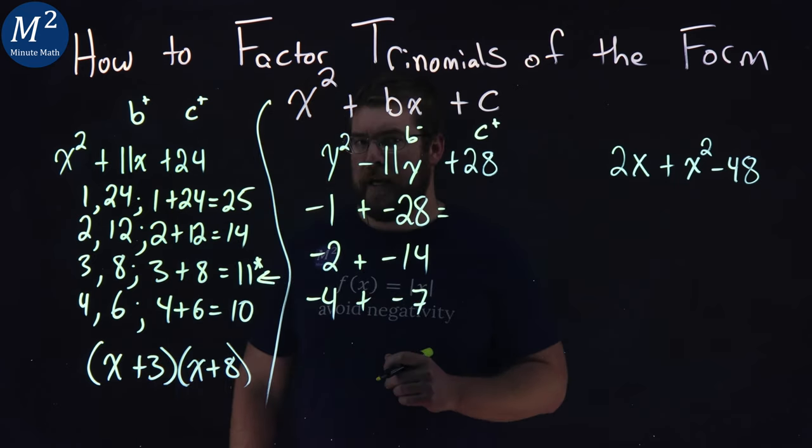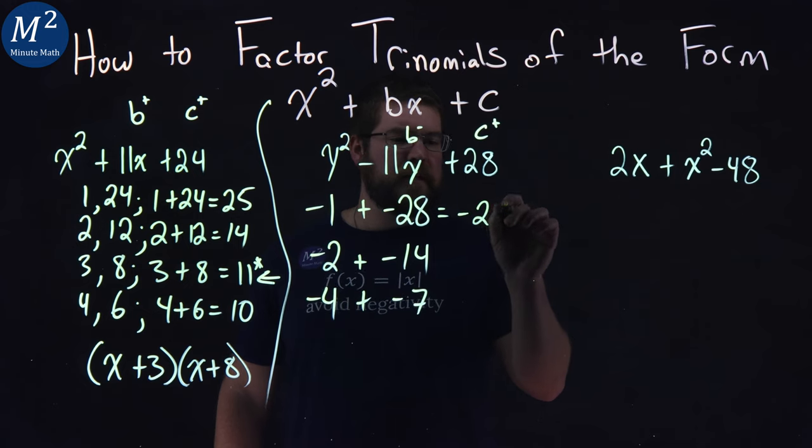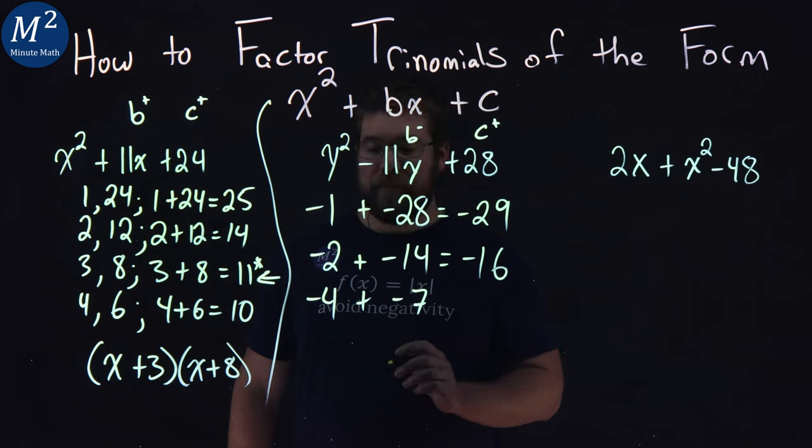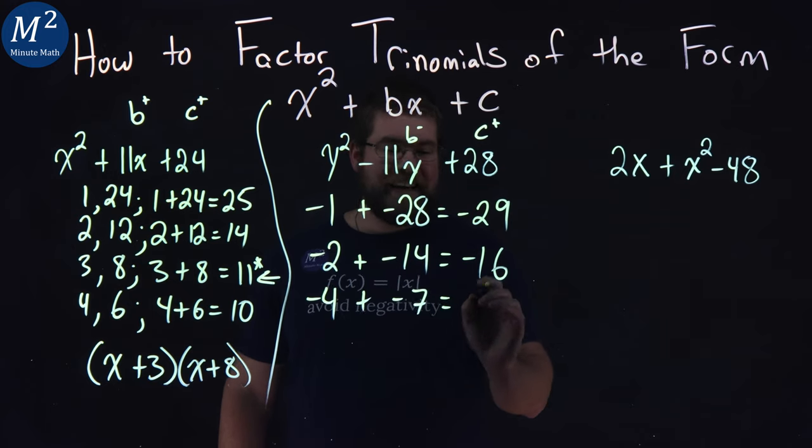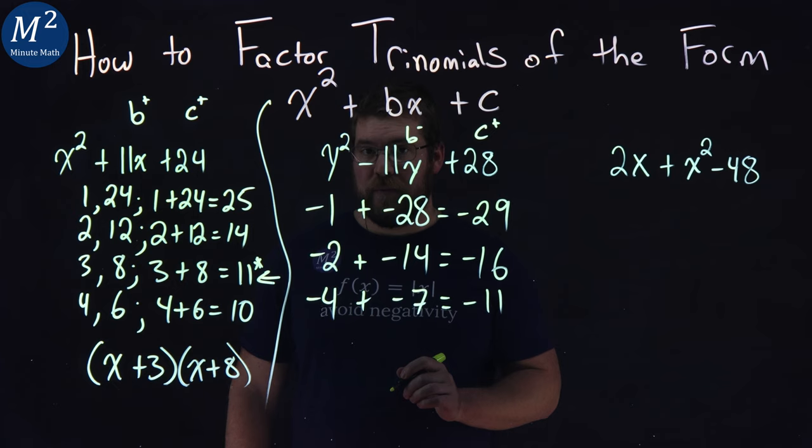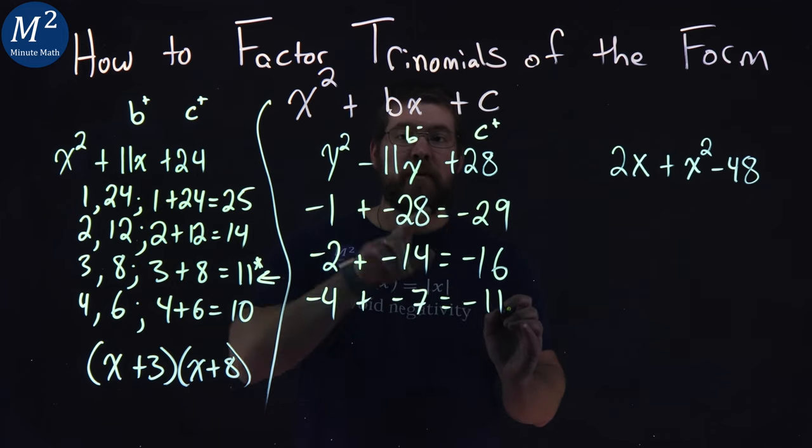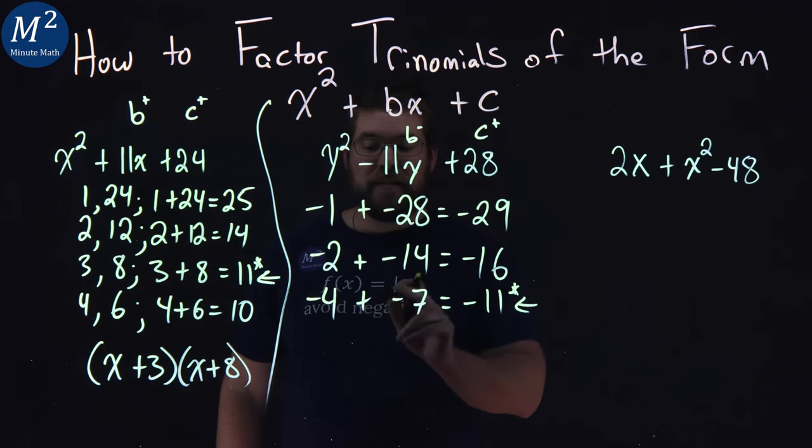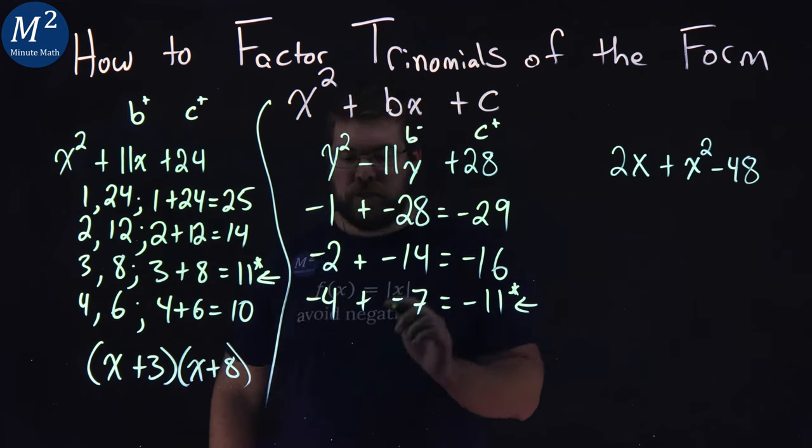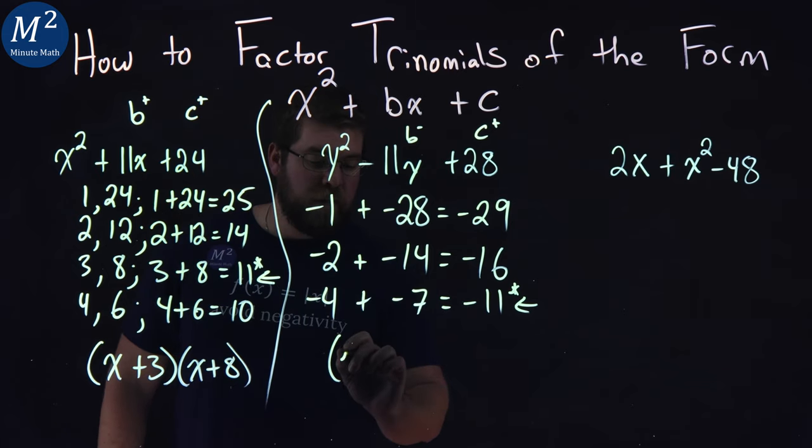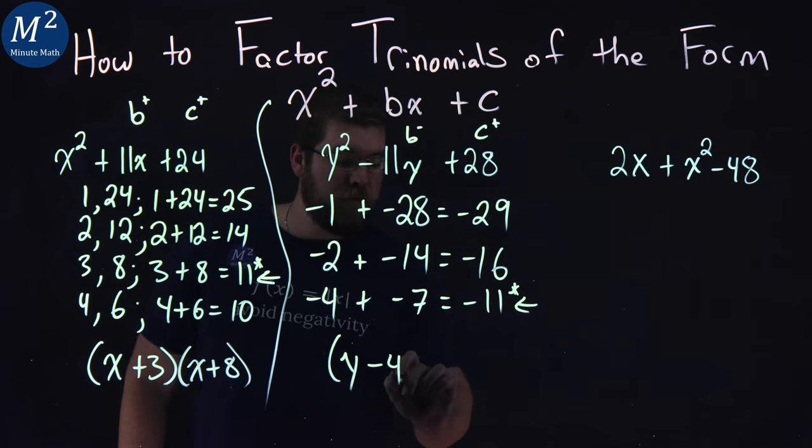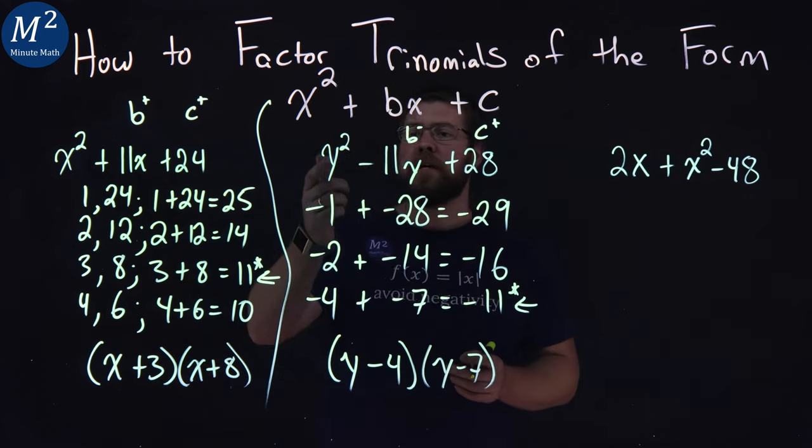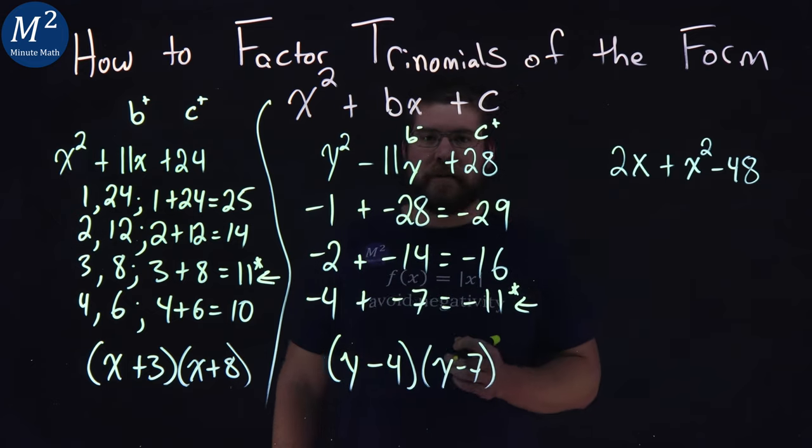Let's go add them up. Negative 1 plus negative 28 here is negative 29. Negative 2 plus negative 14 equals negative 16. And negative 4 plus negative 7 is negative 11. Negative 11 is equal to our b value right here. So we want to use these sets of numbers, negative 4 and negative 7. So if we're going to factor this out, again, our variable is y. We have y minus 4 and y minus 7. And that is the factored form of y squared minus 11y plus 28.